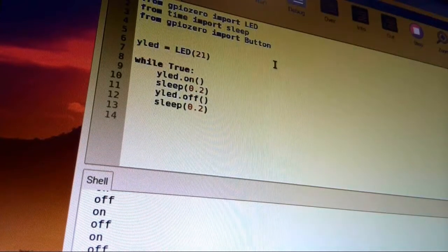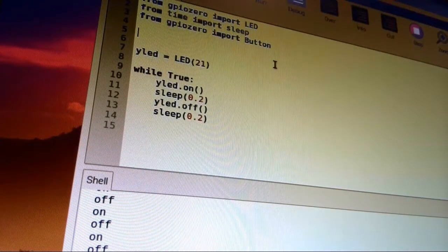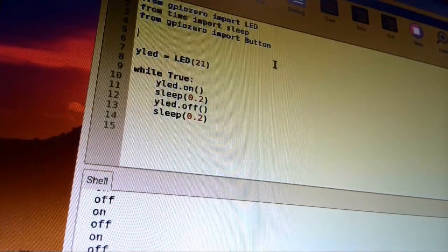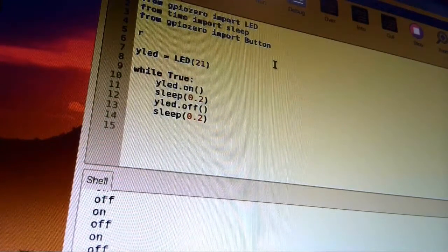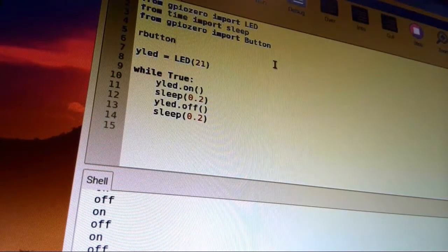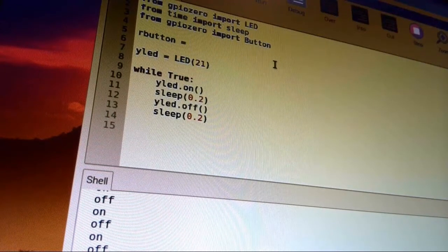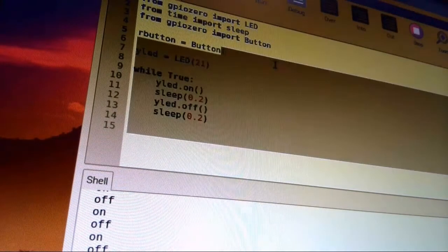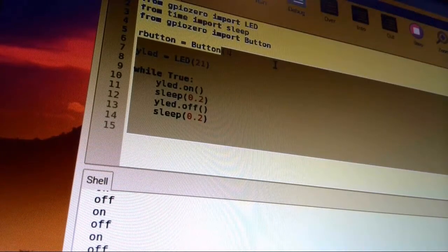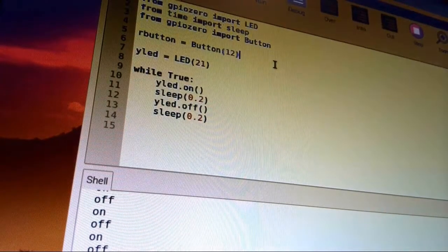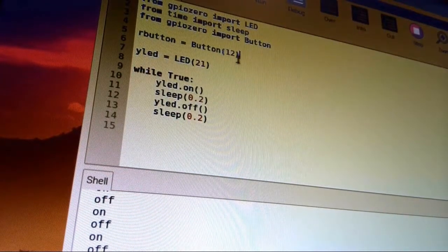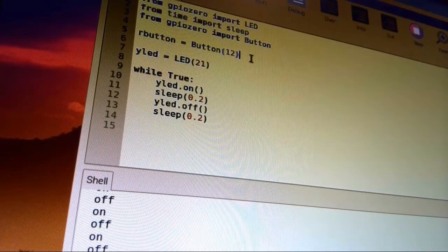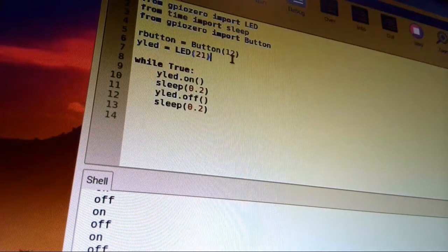And then we need to tell the Raspberry Pi which GPIO pin that button is plugged into. I have a red button, so I'll call it 'rButton'. So 'rButton = Button' and then the pin that I used was GPIO pin 12, so the parameter that I'm going to put inside of that button function is the number of the GPIO pin, which is 12.